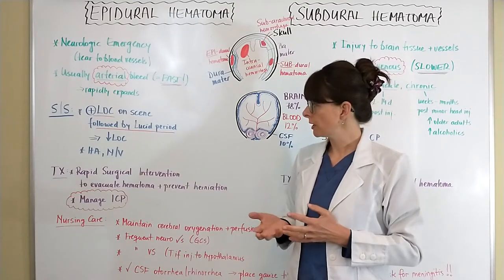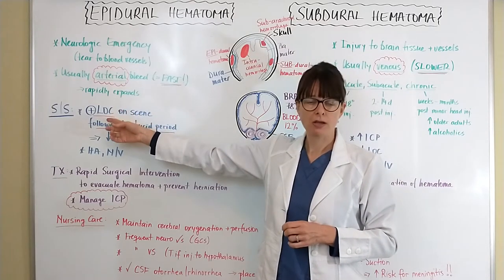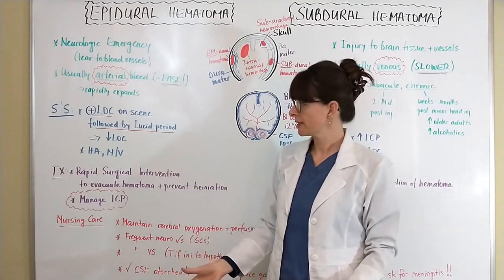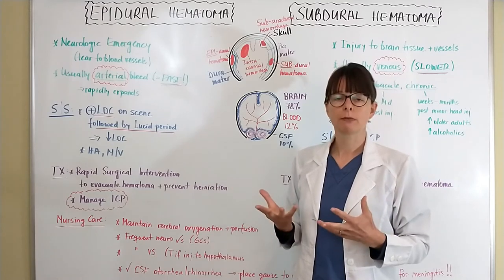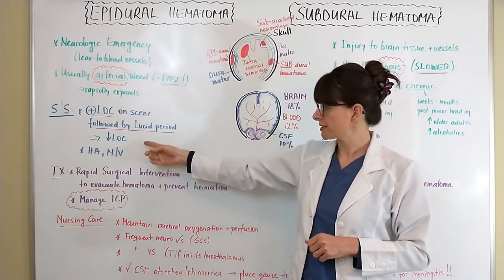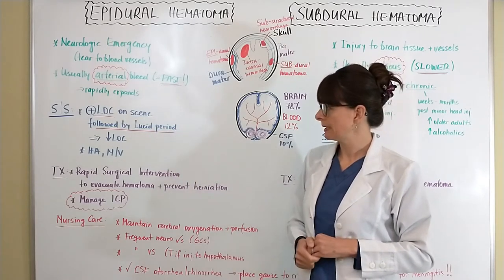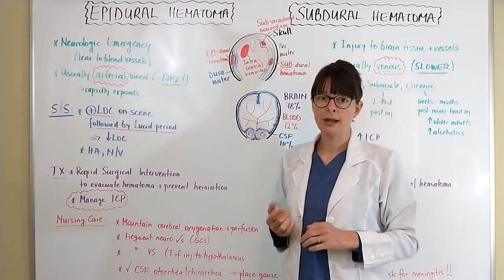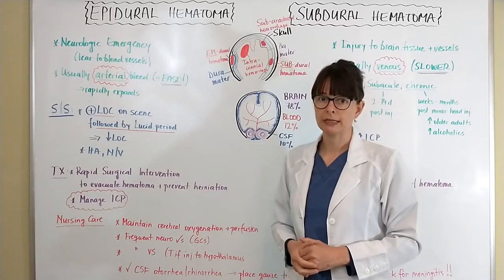The telltale signs and symptoms of epidural hematoma are: some sort of traumatic injury, a positive loss of consciousness, then a brief lucid period where the patient appears completely normal, followed by a sudden decrease in level of consciousness again. That lucid interval is the classic sign of arterial bleeding. There may also be headache, nausea, and vomiting as the meninges get irritated.